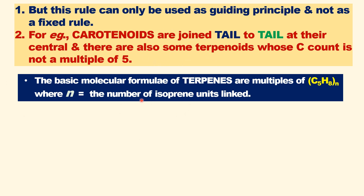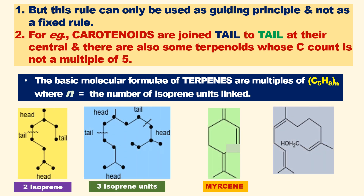The basic formula of terpenoids is (C5H8)n, where n equals the number of isoprene units linked. Let us now see a few examples.